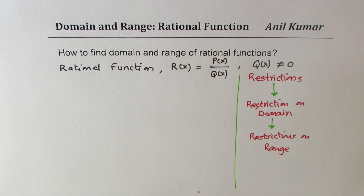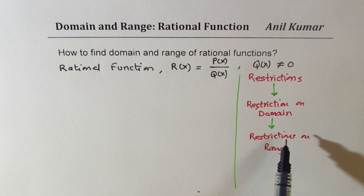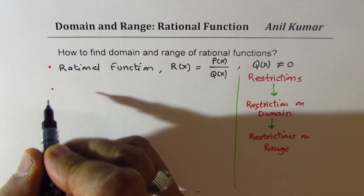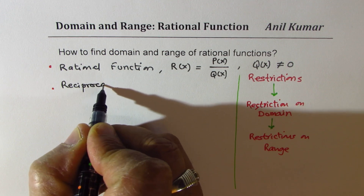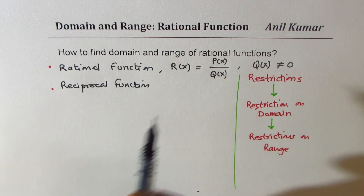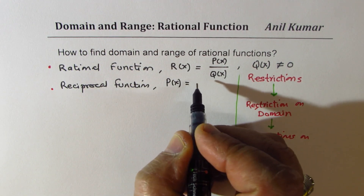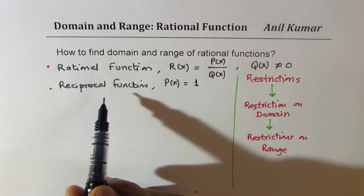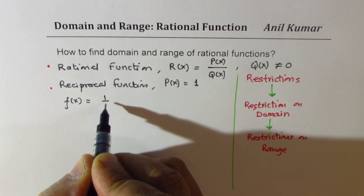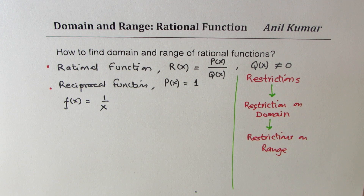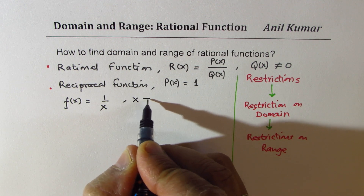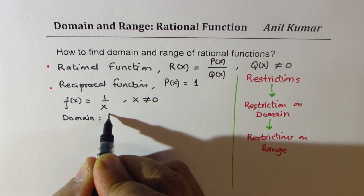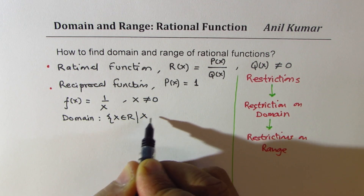The idea is to understand how to figure out the domain and range of rational functions. Let's begin with a very simple function — a reciprocal function. The numerator p(x) could be considered a constant, like 1, which is also a polynomial. So the parent function can be written as f(x) = 1/x. Here, x is not equal to 0, which means domain is restricted. So we say domain is x belongs to real numbers where x is not equal to 0.